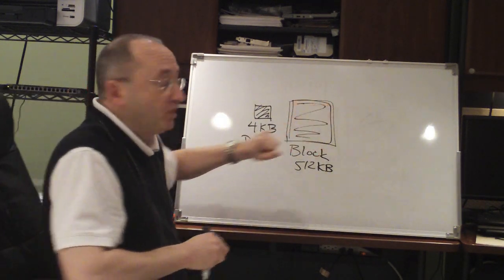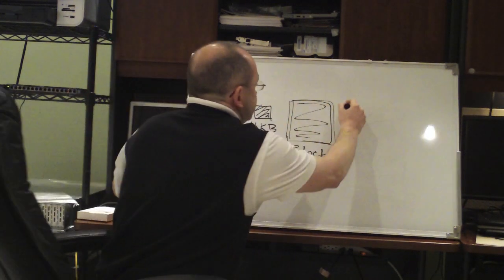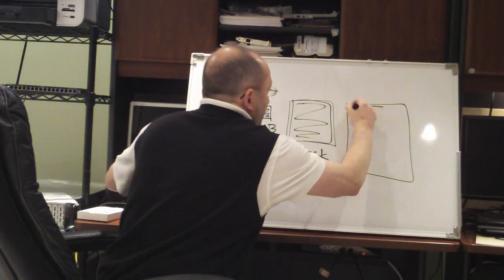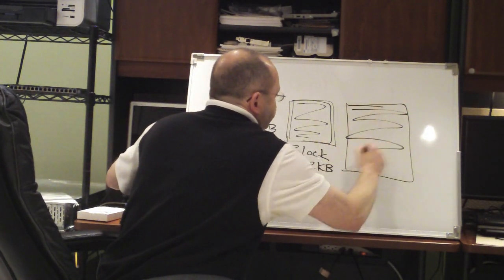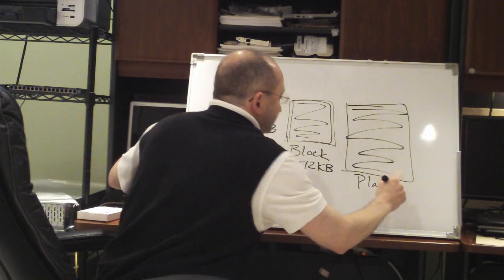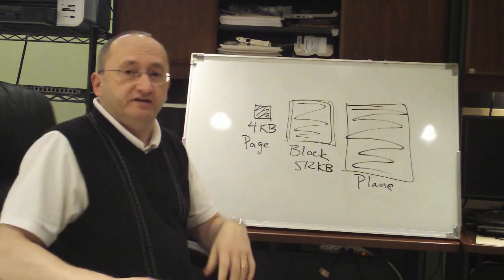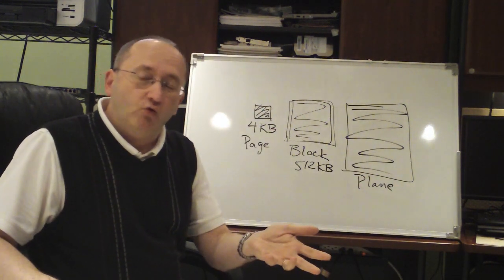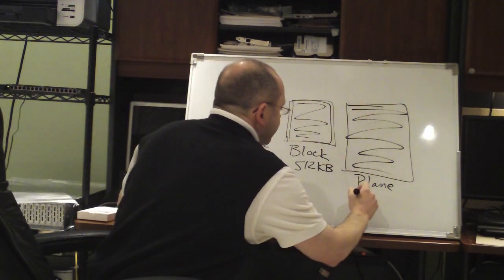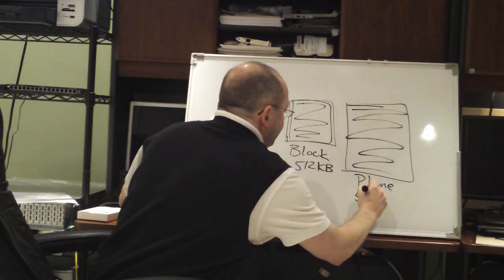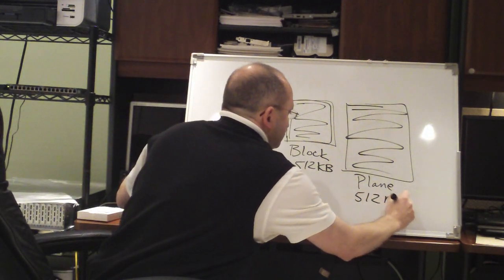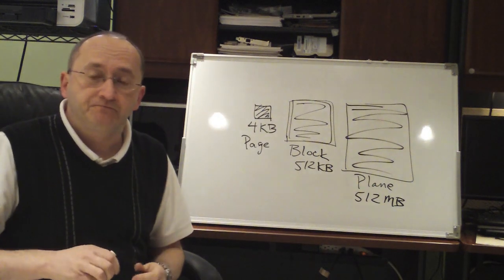Then we take these blocks — about a thousand of them — and combine them into something called a plane. We take about 1,024 blocks to create a plane typically, so that gives us about 512 megabytes per plane.